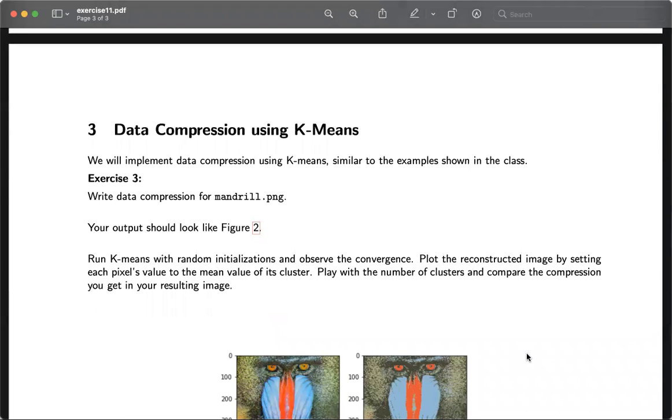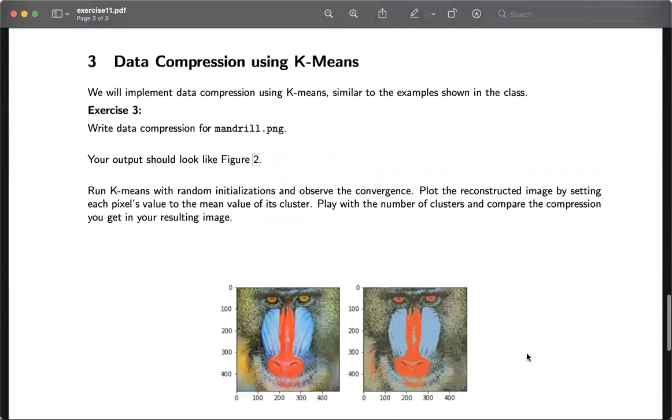In the final part of this exercise, you have to compress an image using the K-means algorithm that you just developed. So first, you transform your image into a vector of RGB values in three dimensions and then apply the K-means algorithm. Keep in mind that you can already terminate your algorithm if you are not improving your cost functions.